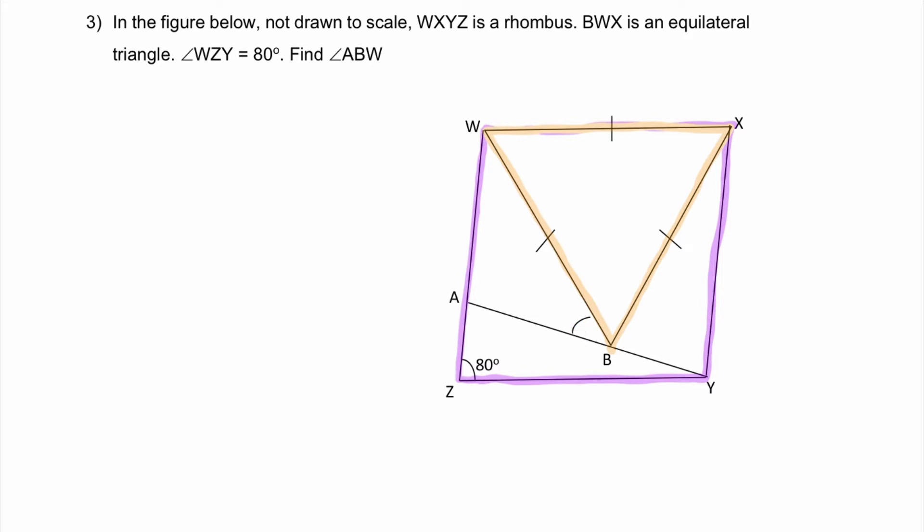Let's start from the first information. WXYZ is a rhombus. So what do we know about the length property of rhombus? They have equal length on all four sides. So let me mark it out. This is the same as this, same as this, same as this. Moving on.